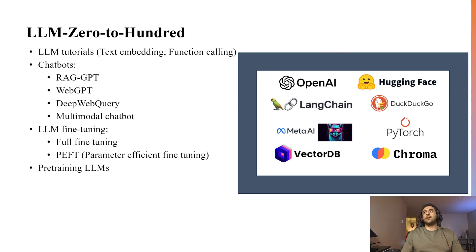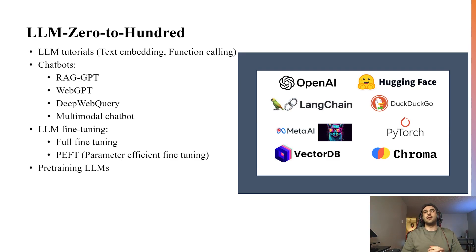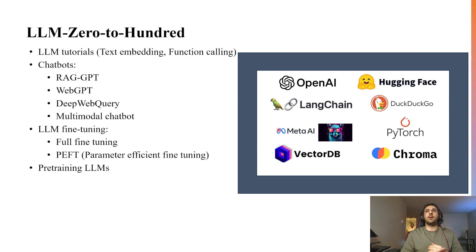DuckDuckGo is the library we'll use for web search. LLAMA is a model I'm going to use to see how it performs against some of our models when fine-tuning and designing systems — it's one of the models I'll use to see the differences. And PyTorch is the library we'll use for fine-tuning and pre-training language models.